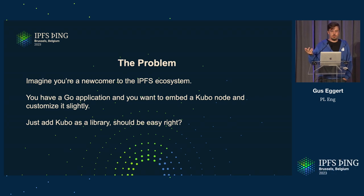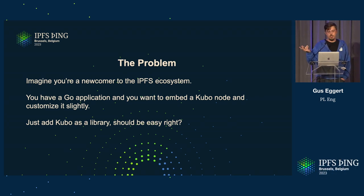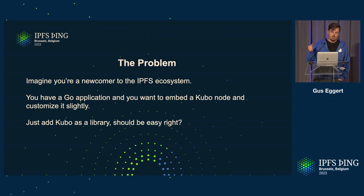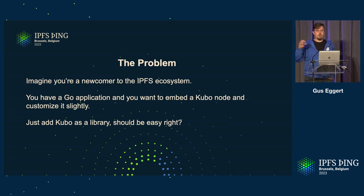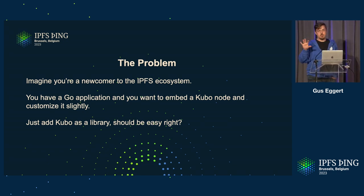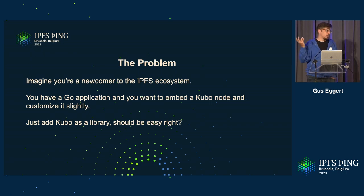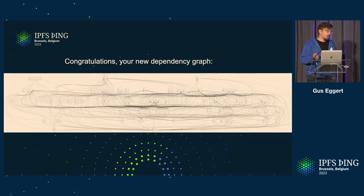Some scenarios some of you might have run into if you're working in the Go ecosystem. Imagine you have an application and you want to embed a Kubo node in the application and customize it a little bit for whatever the needs are. You'd think you can just add Kubo as a library, right? You're going to quickly run into this: your new dependency graph.